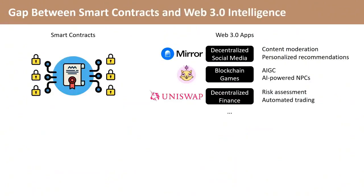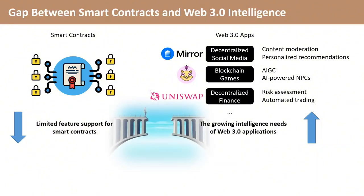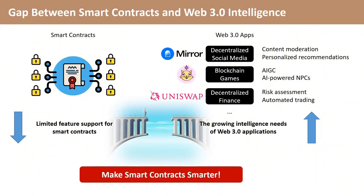One of the key issues hindering the promotion of Web 3 applications is the huge gap between the growing intelligence needs of Web 3 applications and the limited features provided by smart contracts. To bridge the gap, we aim to make smart contracts smarter by supporting model inference functions. Unfortunately, existing smart contracts cannot support AI model inference due to two challenges: high complexity and non-determinism.